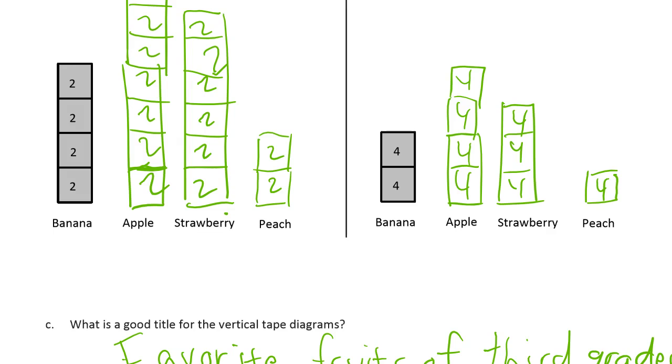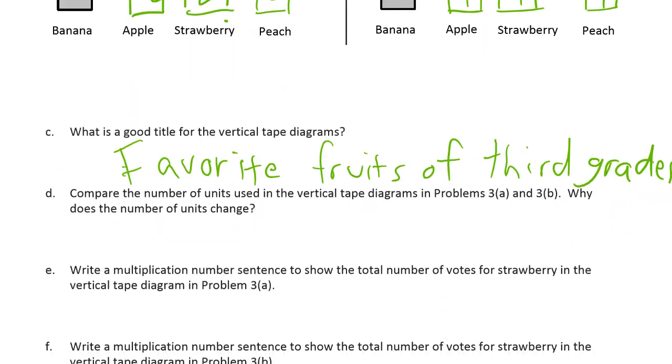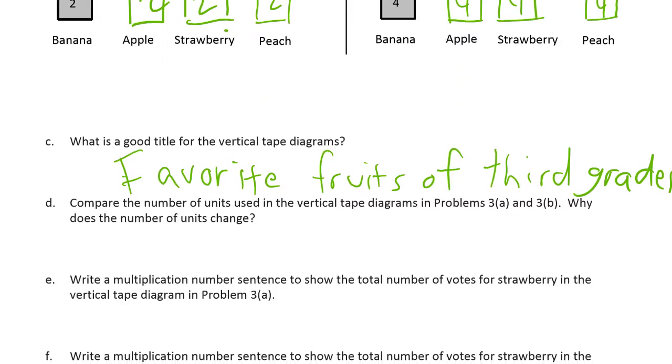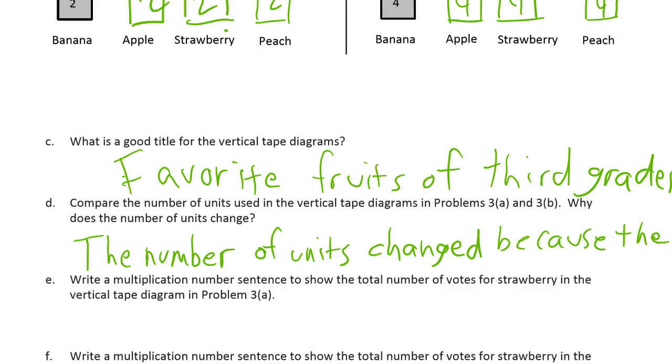So just look at the change in the units. Why does the number of units change? Well, because the units got larger, right? There's twice as many. The number of units changed. Because if you can fit it in here, you could add that the total didn't change.